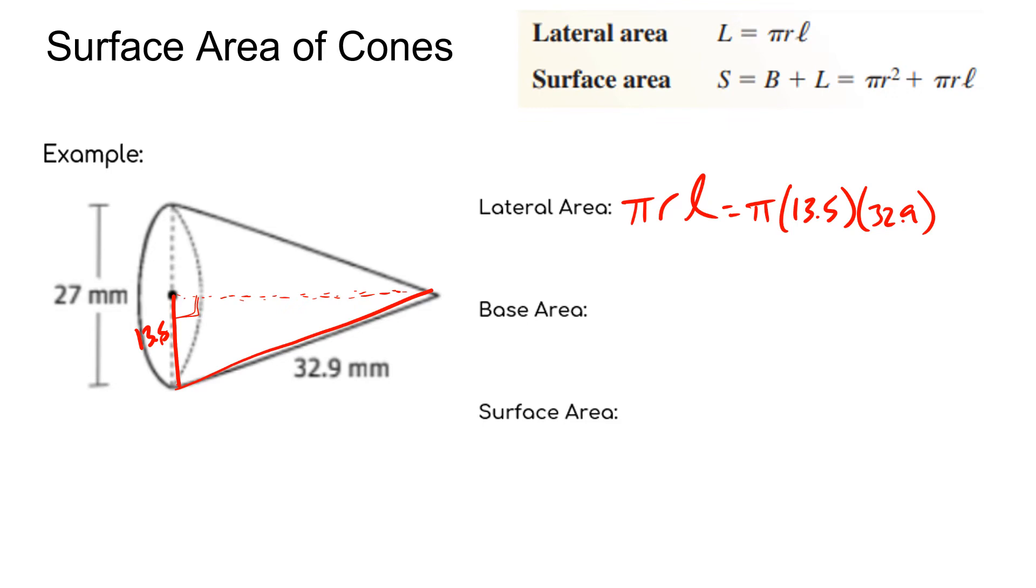And again, while you're typing this into your calculator, use the real π. So we have π times 13.5 times 32.9, and that is 1395.34. So the lateral area, that's just this outside part right here, is 1395.34 square millimeters.